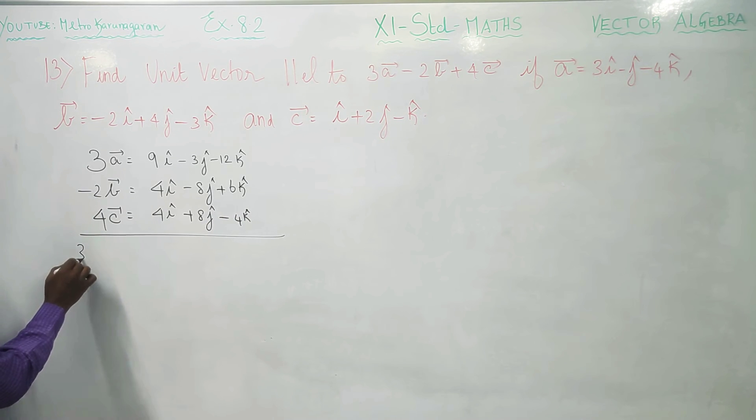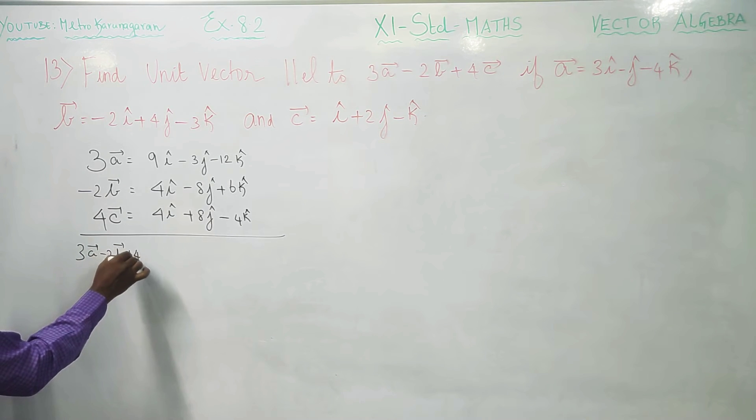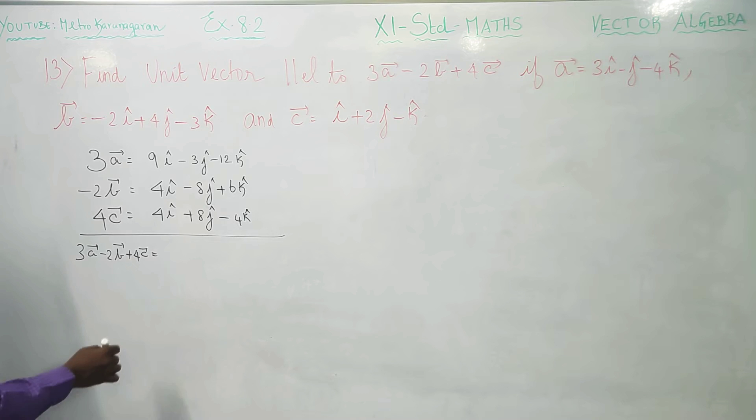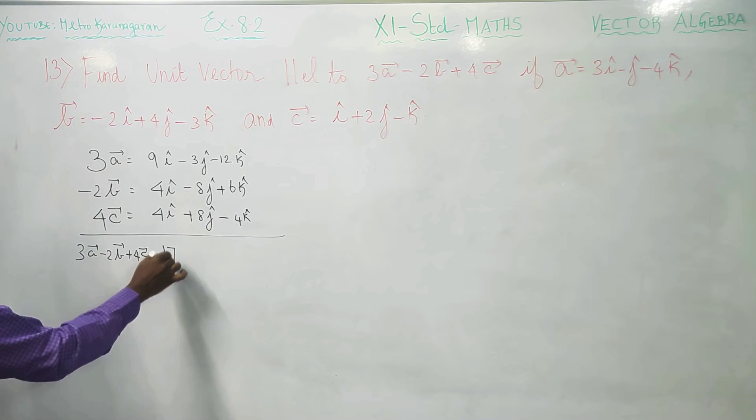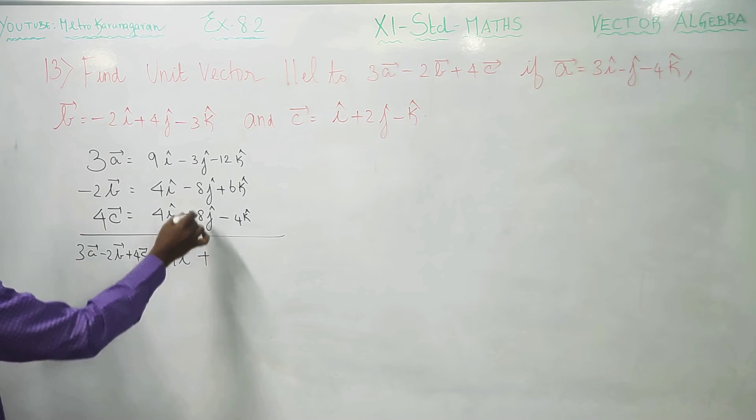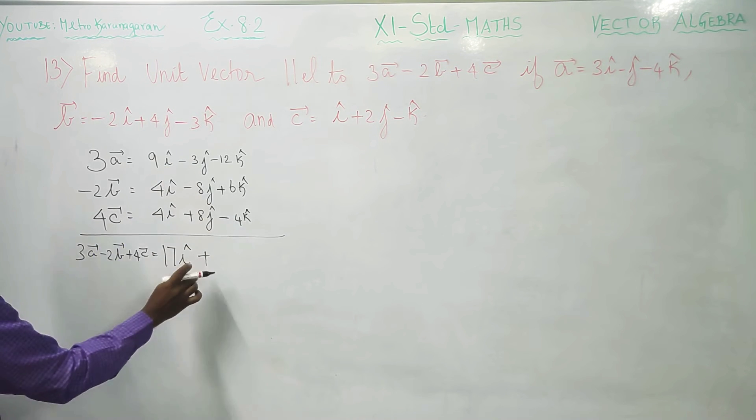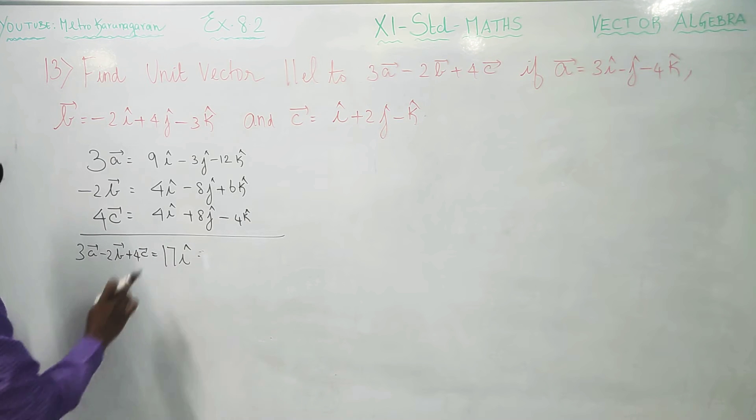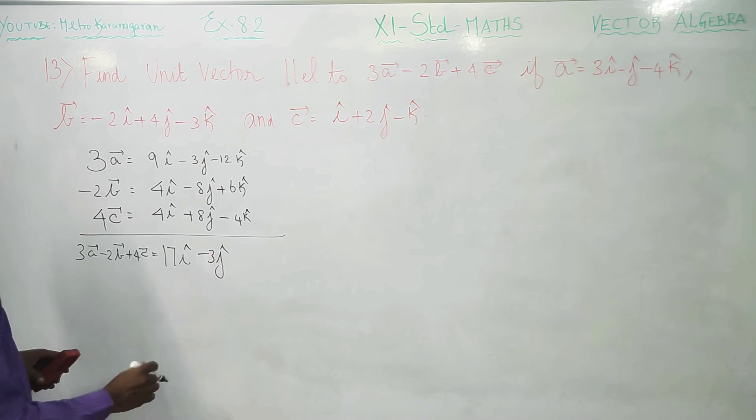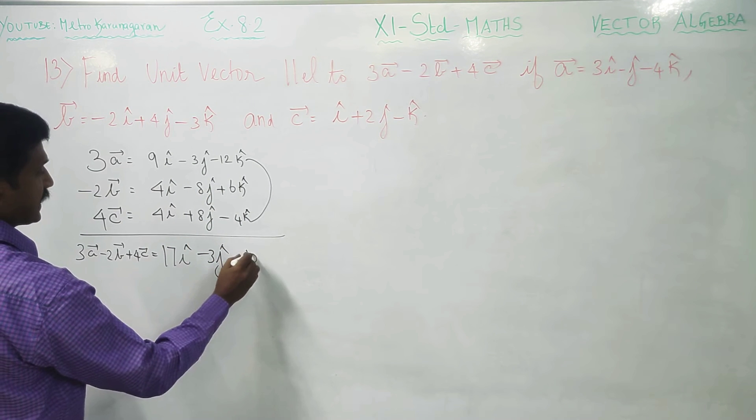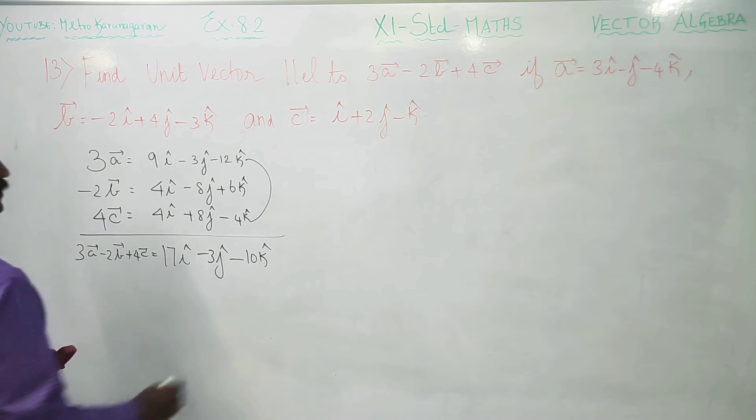You have to just add 3a vector minus 2b vector plus 4c vector, just add this. 9 plus 4 is 13, 13 plus 4 is 17i. Then plus 8 minus 8 cancels, therefore you will be getting minus 3j. Then this is minus 16 minus 10k.